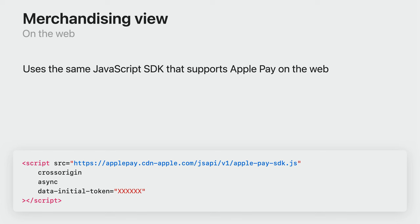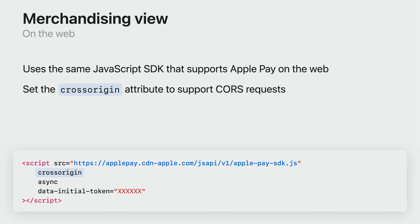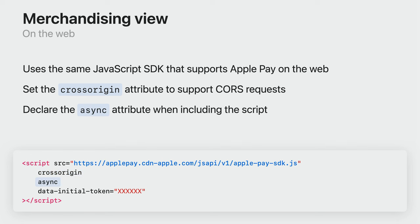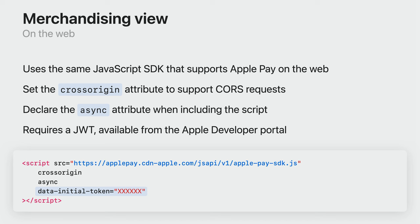If you want to support the merchandising view on the web, there are a few setup steps you will need to perform first. The API for displaying the view is provided within the existing Apple Pay JavaScript SDK, but there are some new attributes you may need to set when including it. It's important to set the cross-origin attributes if you're required to support cross-origin resource sharing requests. Use the async attributes to ensure the script loads and executes independently from your page's loading progress. A JWT is required to authenticate requests to the API, and this token can be generated on the Apple Developer Portal.